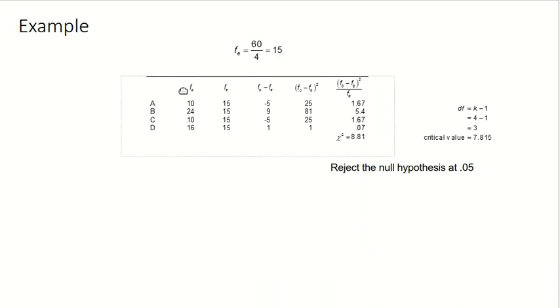In this table, we see the observed frequencies set up next to the expected. This column is the difference between those. This is the square of those differences. And this is the square of those differences divided by the expected frequency of 15. If we add those together, we get a chi-square value of 8.81.